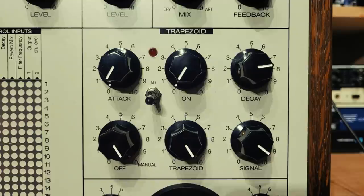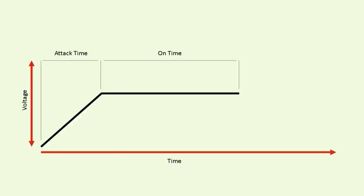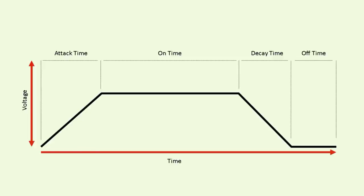The Syntrax has a trapezoid module that may be unfamiliar if you're used to more normal ADSR envelopes, but it's really easy to understand. There's an attack time where the voltage rises from zero volts to the maximum level. That is followed by an on time, which you can think of as a hold time, where the voltage is held at maximum. There is then a decay time where the voltage returns to zero, and an off time which defines how long the voltage stays at zero before we start again.